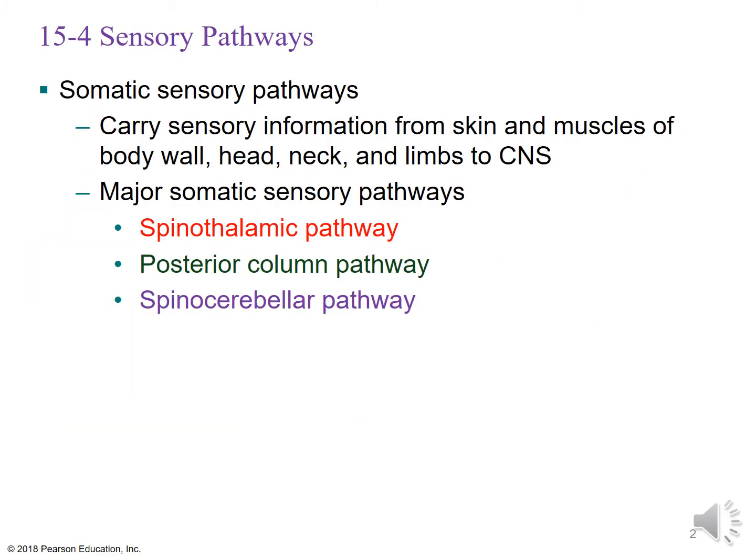Today we're going to talk about the three different somatosensory pathways. These carry sensory information from the skin and muscles of the body wall, the head, the neck, and the limbs to the central nervous system. The names of the three are color coded to help you remember: the spinal thalamic pathway is in red, the posterior column pathway is in green, and the spinal cerebellar pathway is in purple.